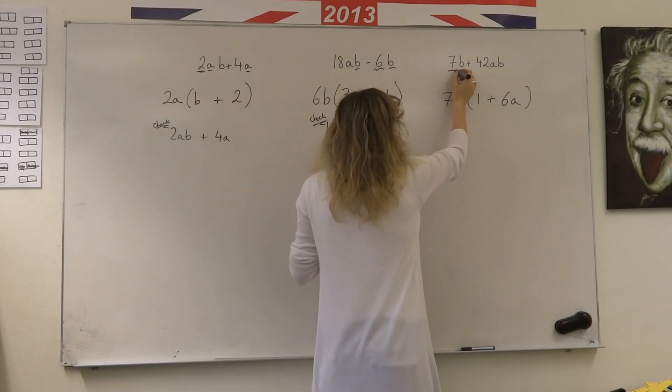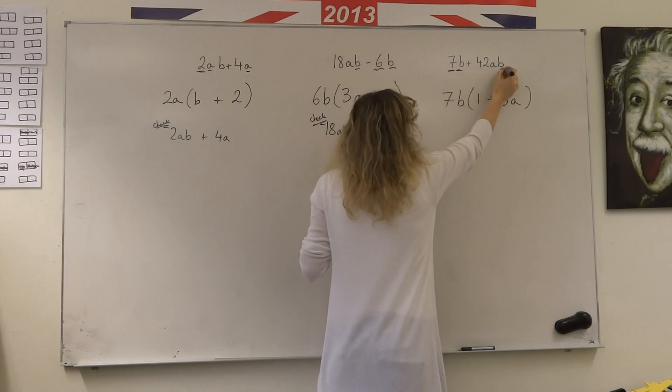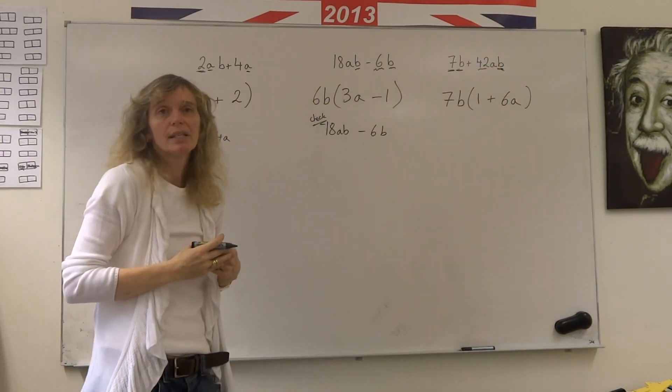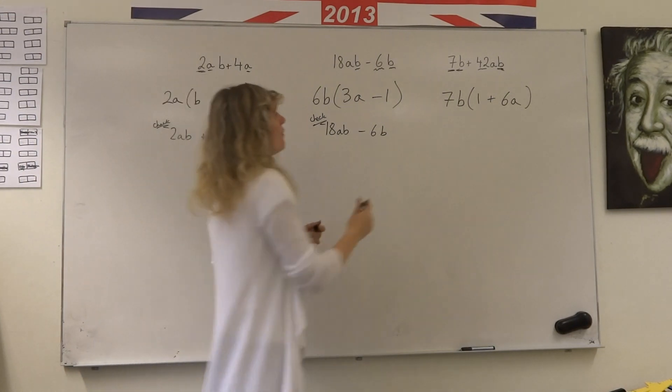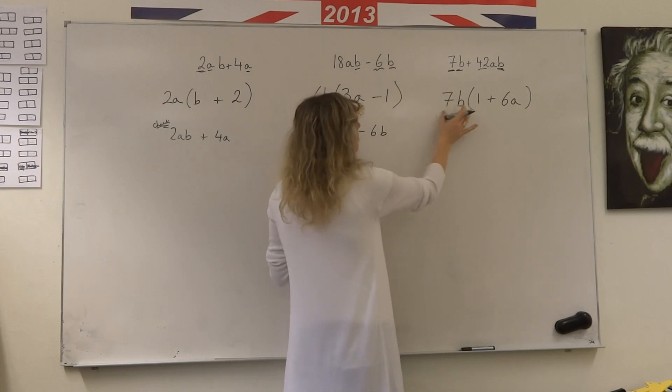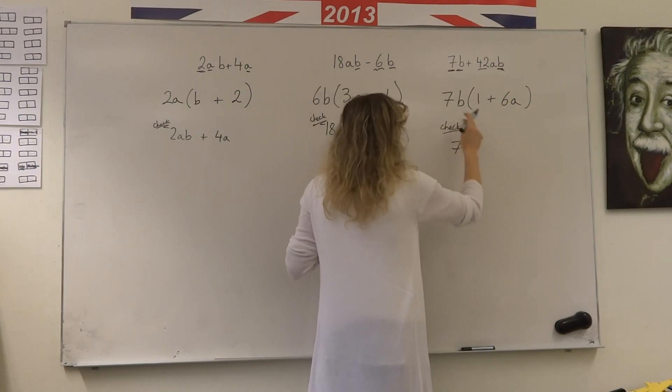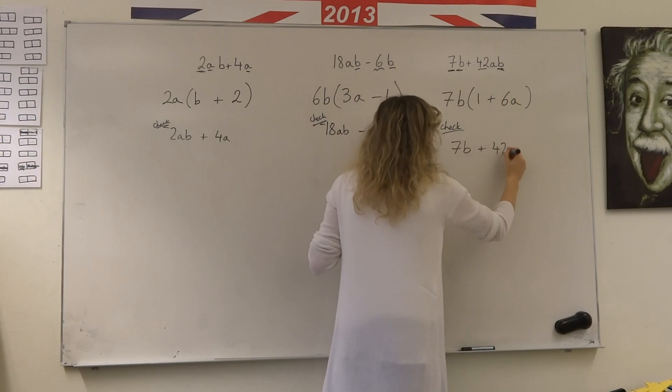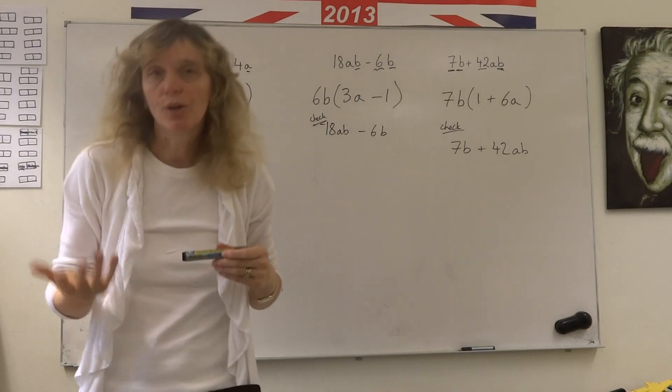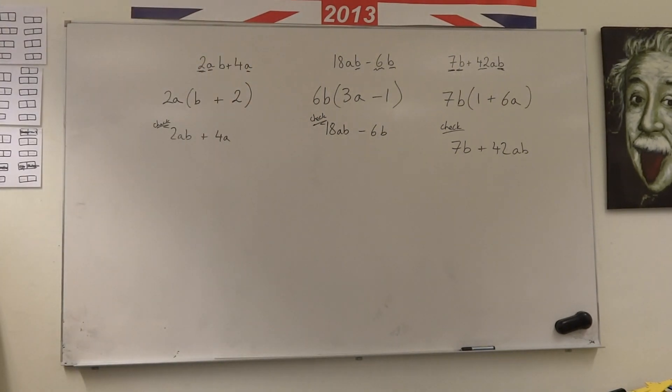We're looking for the 7 here and we have a B here and a B here, and this one is a factor of 7 and therefore we can take it out the front. Then we do our final check. Expand the bracket back out. 7B times 1 is 7B. 7B times 6A, 6 times 7 is 42. A times B. And that's how we do factorising. Thank you.